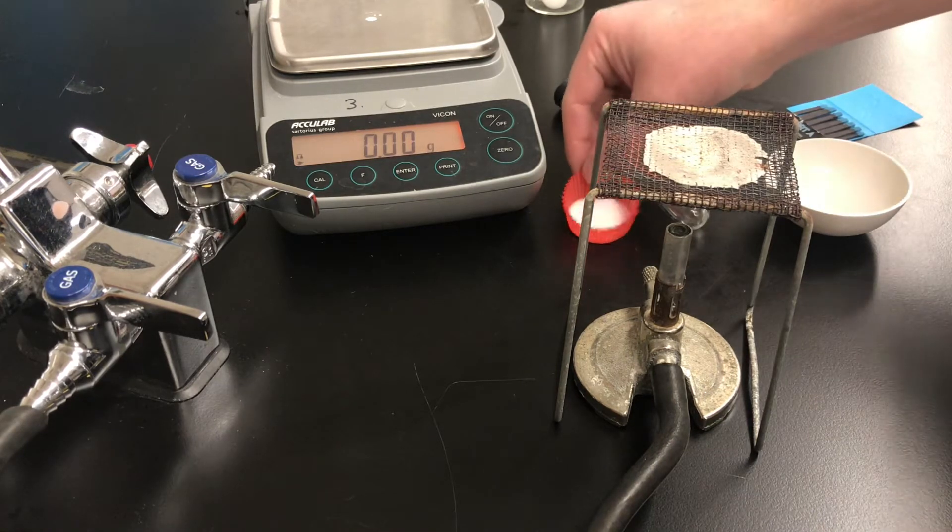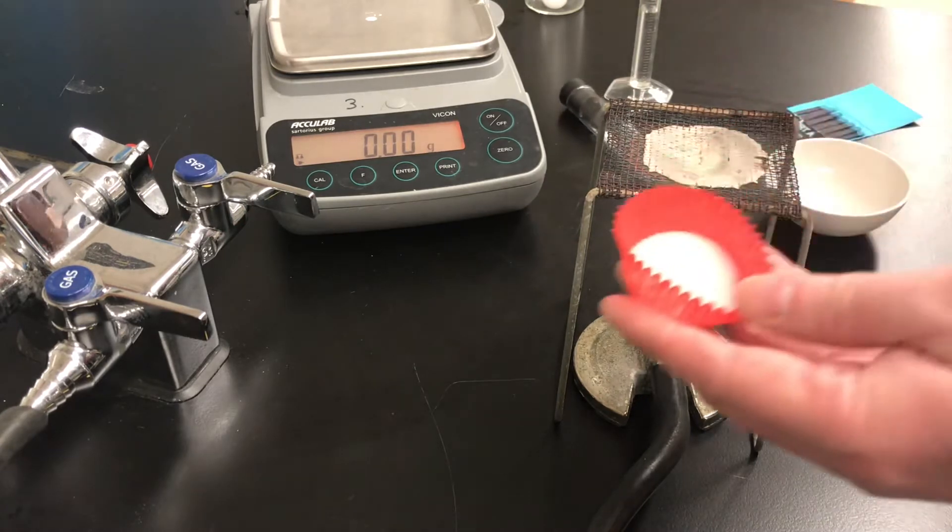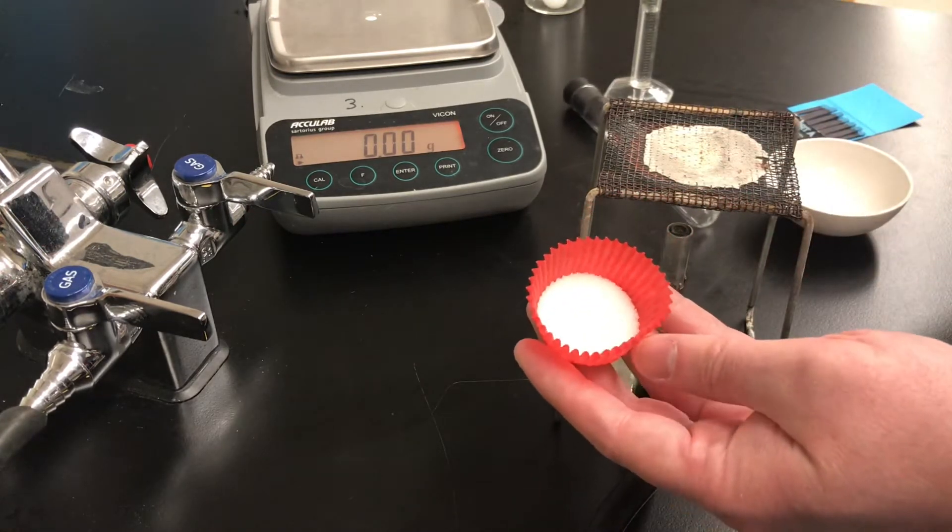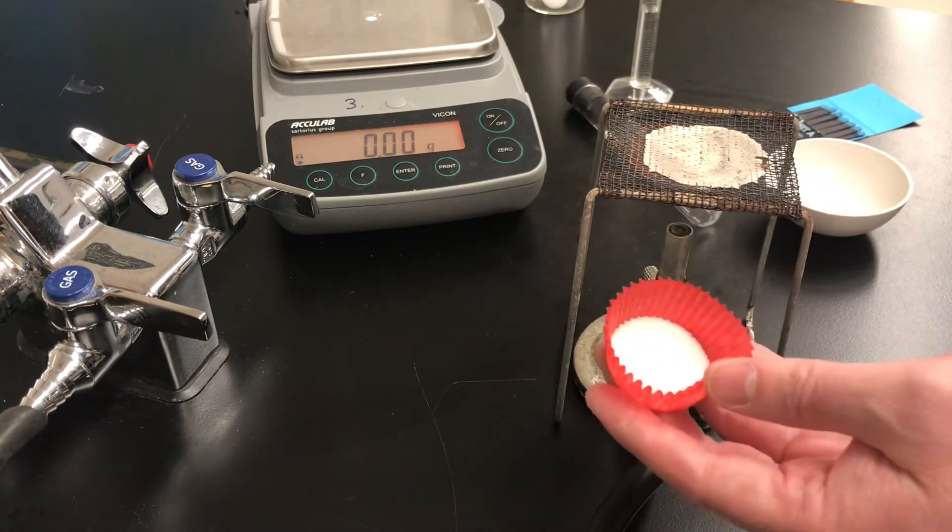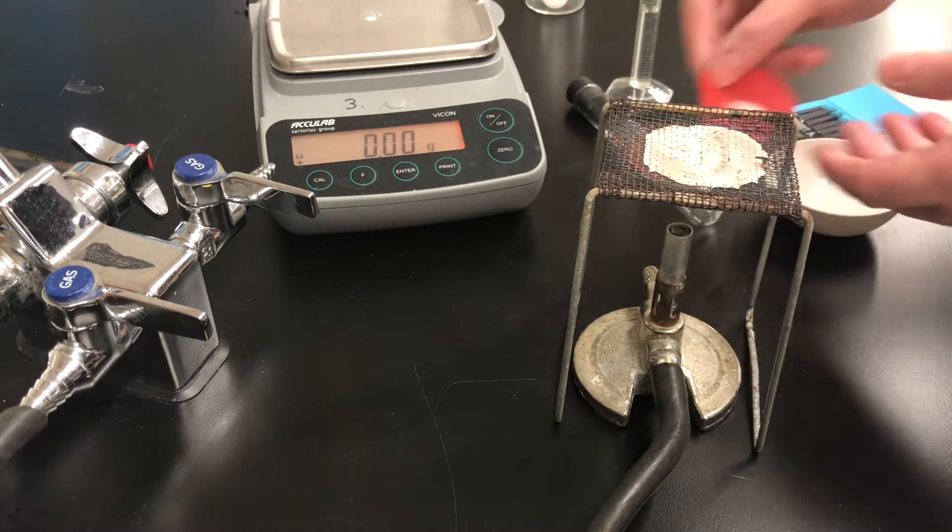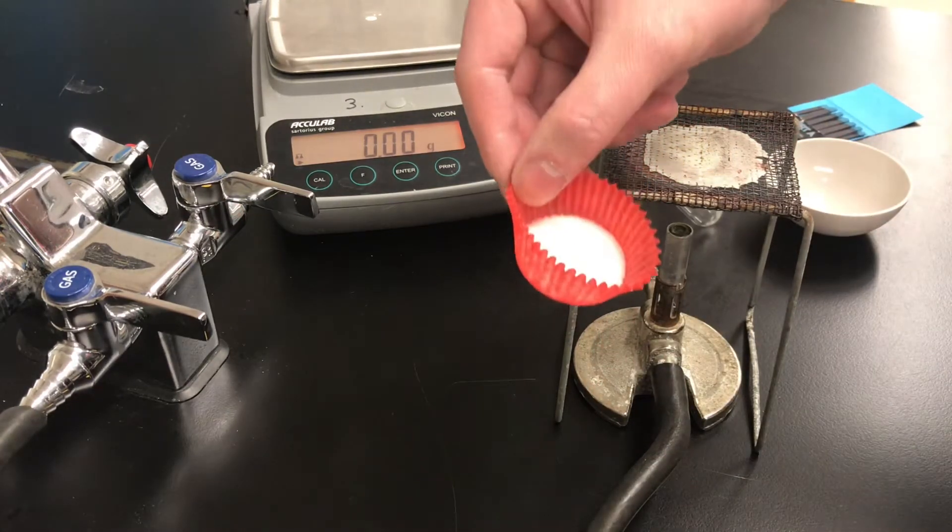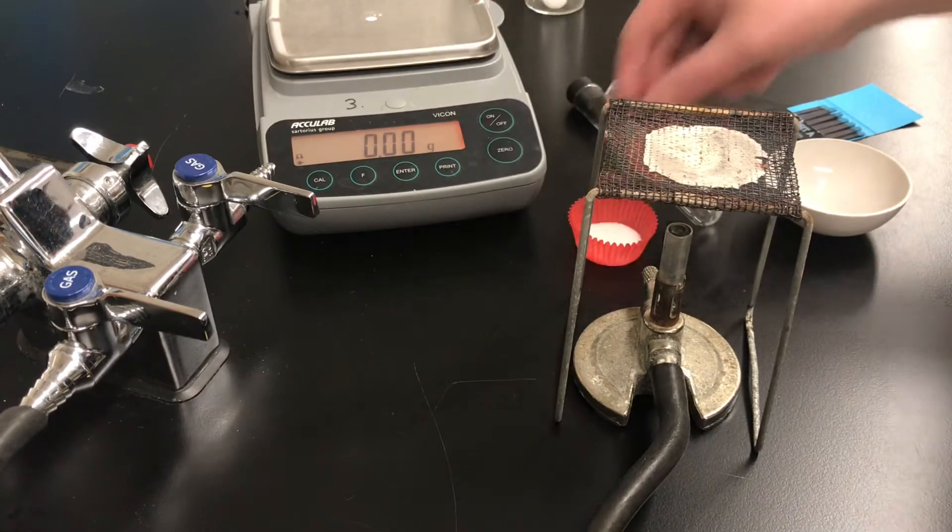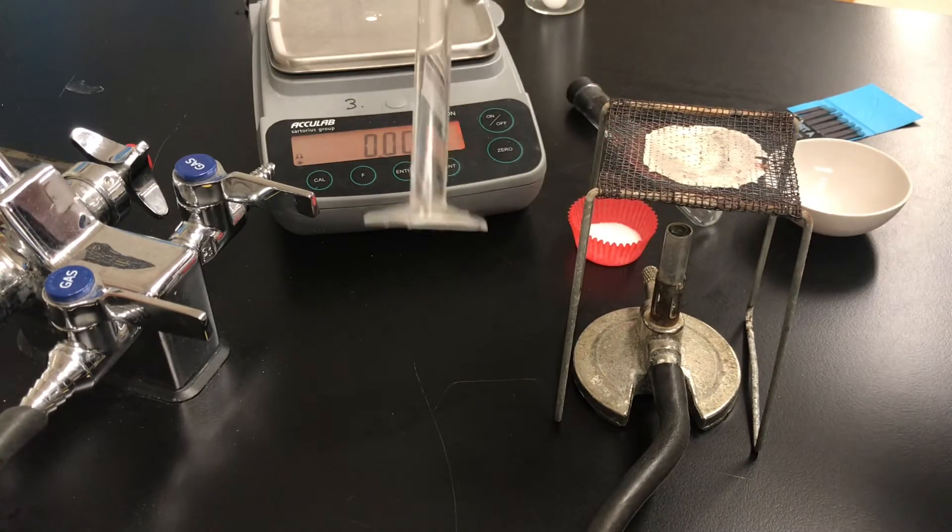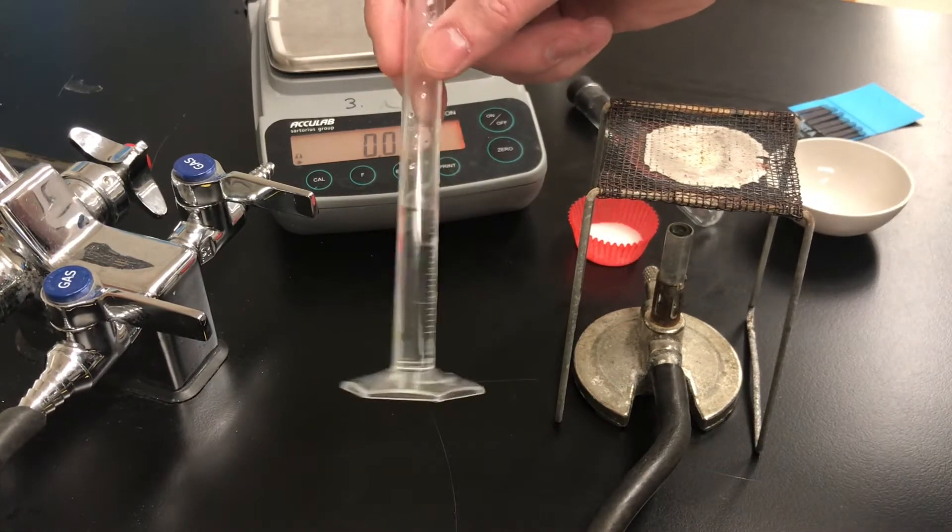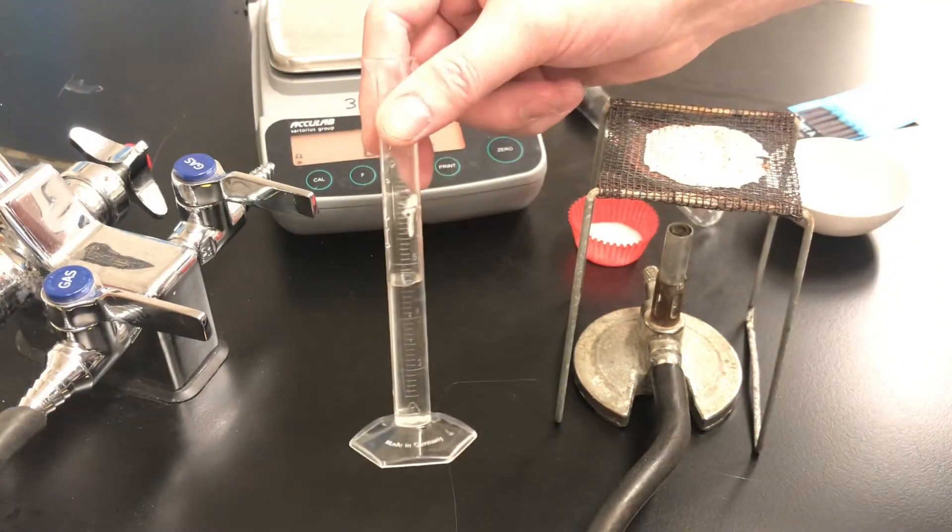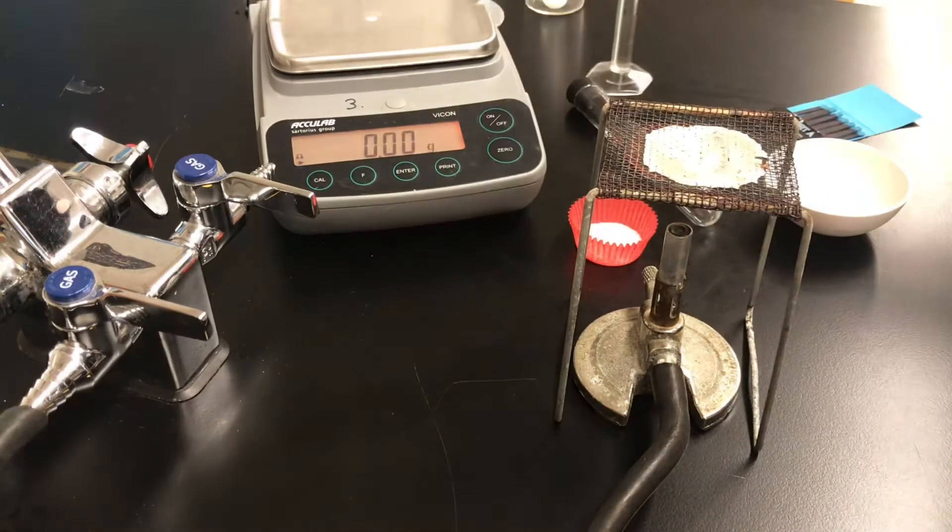We're going to be using sodium chloride table salt. This is the same salt you'd have in the kitchen although it's a little bit purer than what you would have at home. I've got about 5 grams of the table salt in a little cupcake. I've also got about 5 milliliters of water measured in a graduated cylinder. The exact volume is not critical.